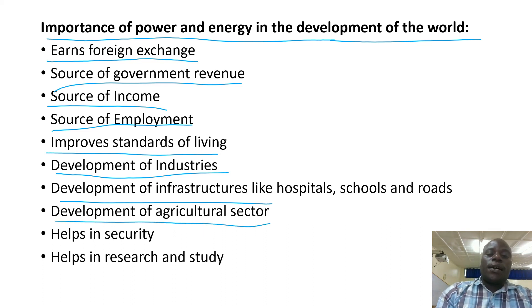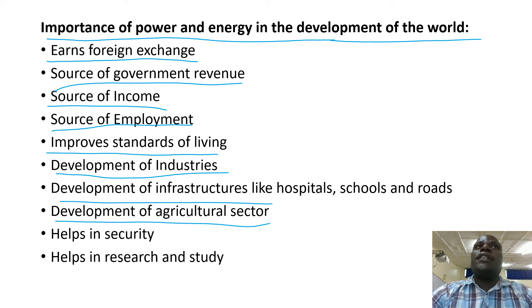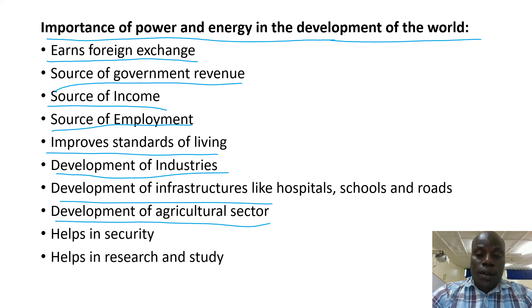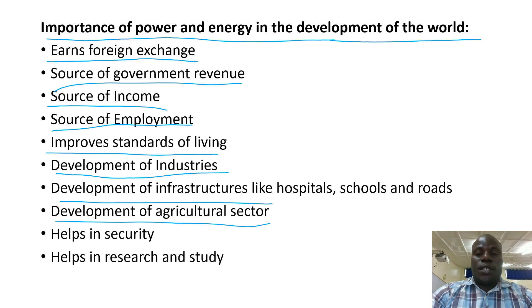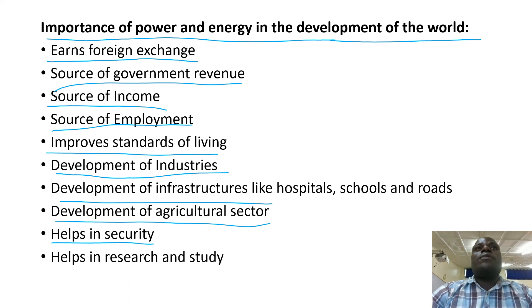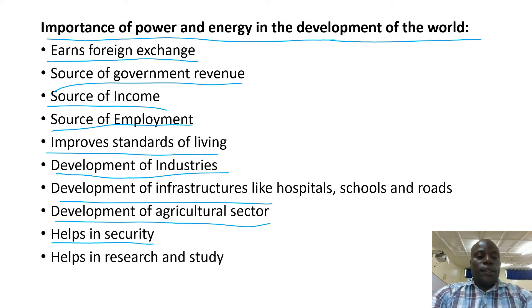Power and energy promotes the development of the agricultural sector. It promotes agro-based industries, because industries which use agricultural products as raw materials also process those products using power. Power is also used to preserve agricultural products like fruits and meat. Furthermore, power helps in security — you always hear of security lights, and some people even build fences and put power in wires to scare away criminals.